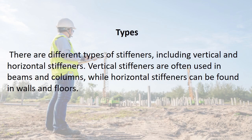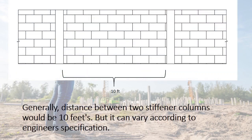Types: There are different types of stiffeners, including vertical and horizontal stiffeners. Vertical stiffeners are often used in beams and columns, while horizontal stiffeners can be found in walls and floors. Stiffener columns are crucial for enhancing the structural integrity and stability of various constructions, ensuring they can withstand applied loads and environmental forces. Generally, the distance between stiffener columns would be 10 feet, but it can vary according to the engineer's specification.